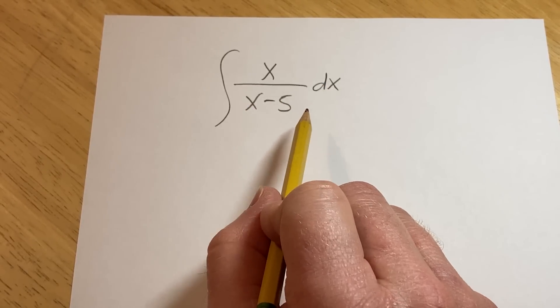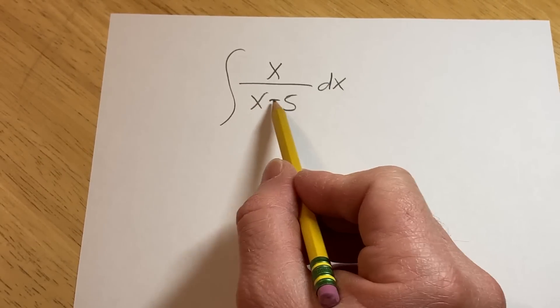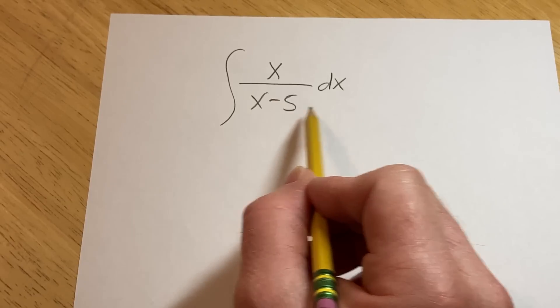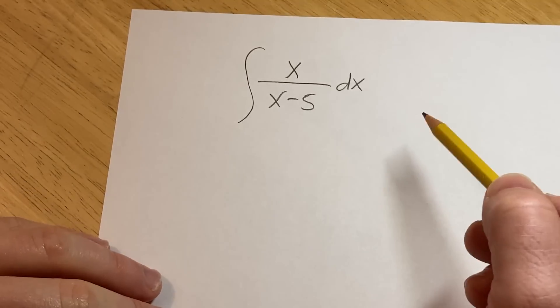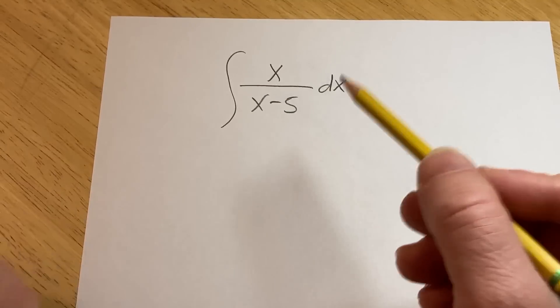So there's a couple ways of doing this. You can actually make a u substitution and work through it, but there's an easier way and I'm going to show you the way I would do this if I was just asked to do this on the spot.